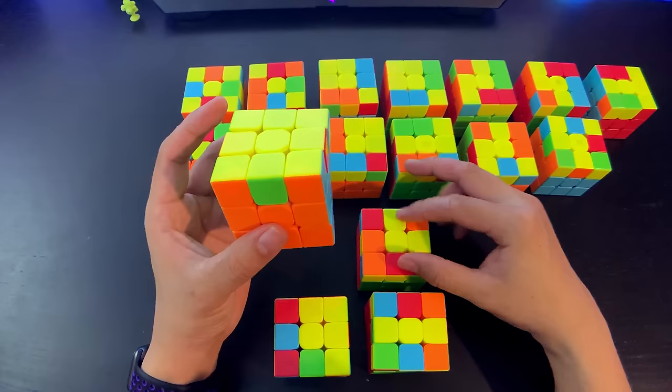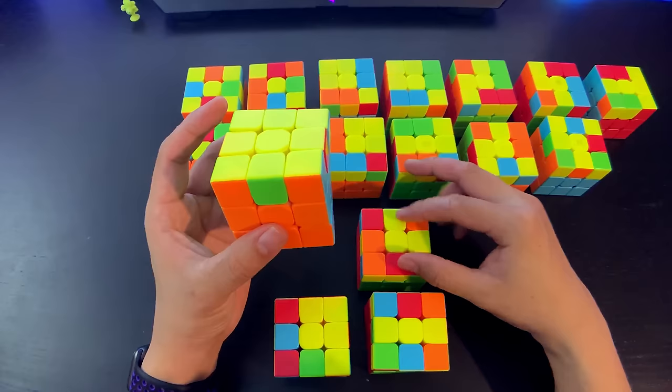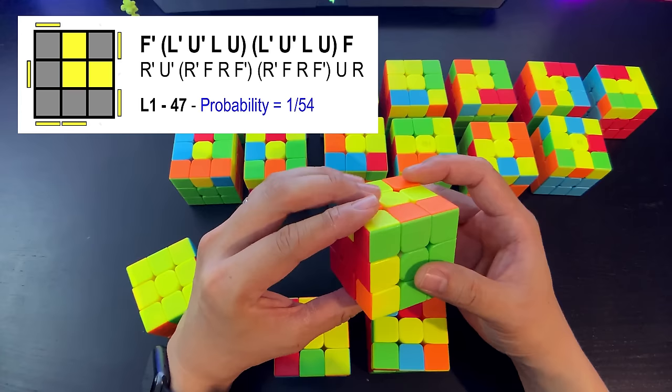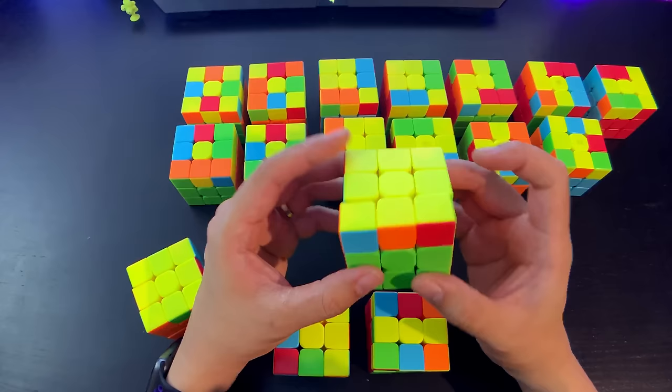R-U, R'-U', and front prime. This one is the exact mirror image of that, so you would just go front prime instead of front, then two sexys on this side. Those were easy ones to learn and recognize.